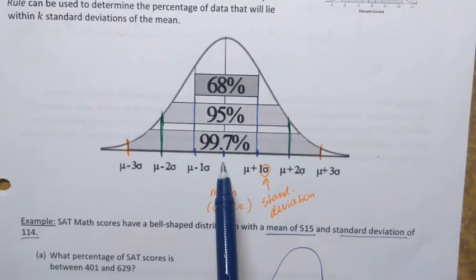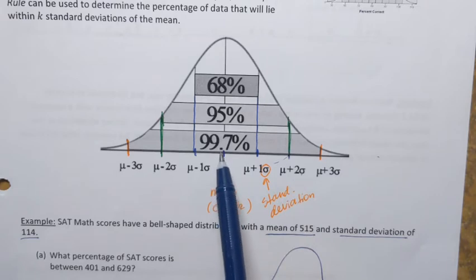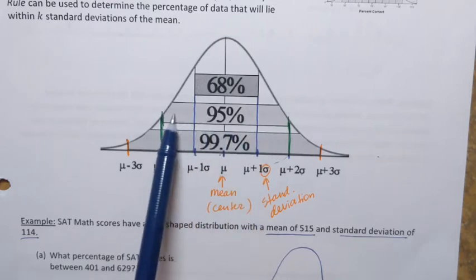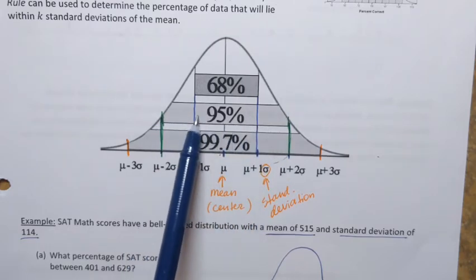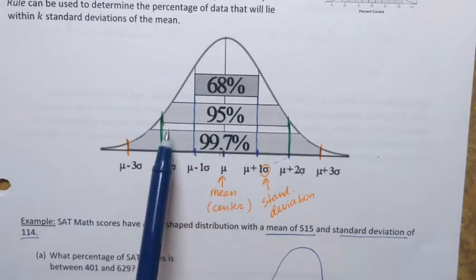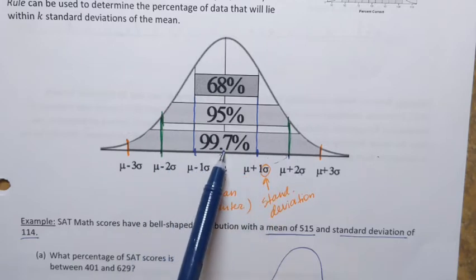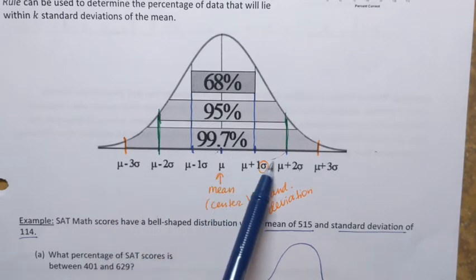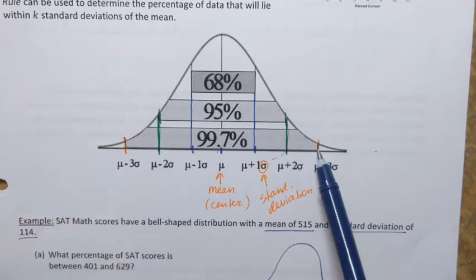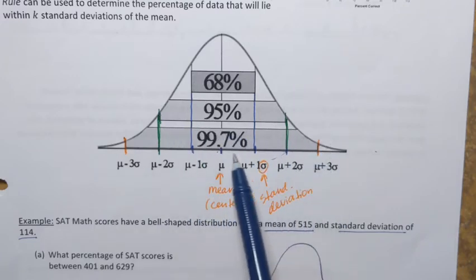Within two standard deviations away from the mean — two steps to the right and two steps to the left — I will have 95% of all observations, meaning 95% of all people who took the SAT math exam will have their scores in that range. And within three standard deviations away from the mean — three steps left and three steps right — we'll have almost everyone: 99.7%.